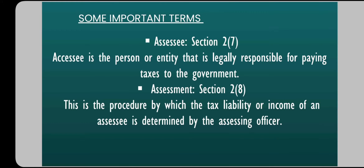So assessee, meaning the taxpayer, basically whoever is paying tax to the government — that is what we are calling assessee here. Assessee can be any individual like you and me. If we are earning a certain amount, we will pay tax to the government. It can be a business, it can be a company or firm. So basically, it is the person or entity that is legally responsible for paying taxes to the government.